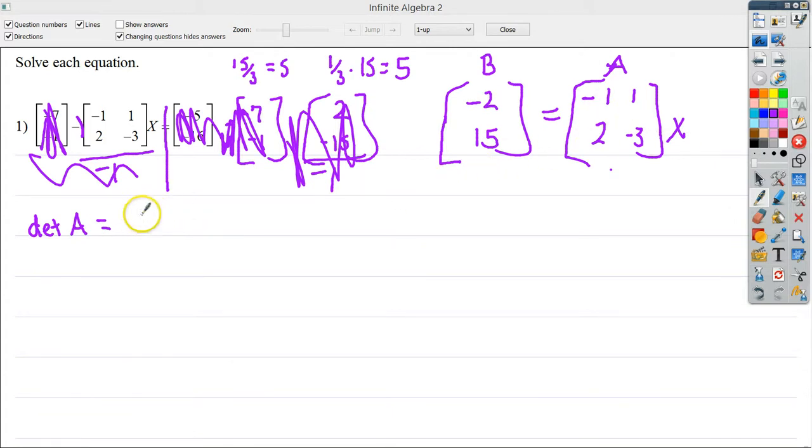So my determinant here would be negative 1 times negative 3, which is just 3, and minus 2 times 1. So I end up with a determinant value of 1, which is very convenient. It'll make my math easier later. So now that I know it's possible, because if this were 0, there is no inverse. But in this case, I know that there is, because I get a non-zero answer.